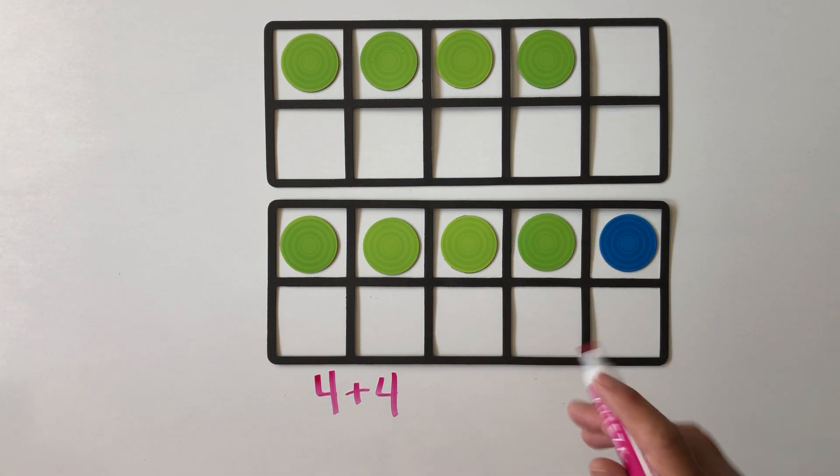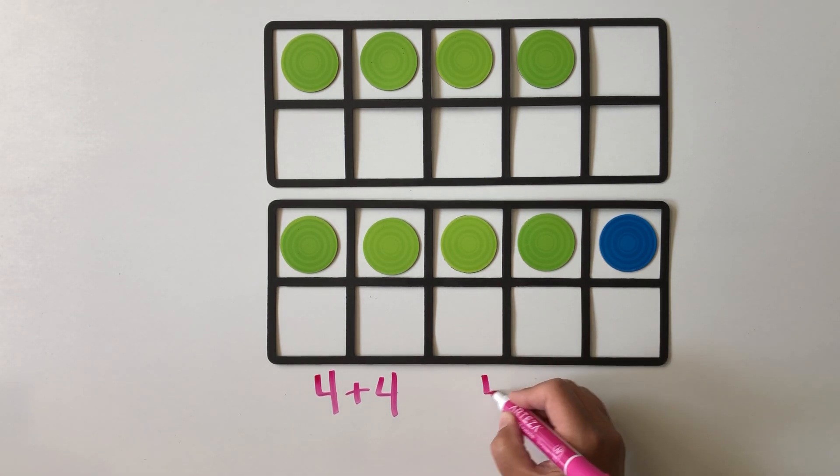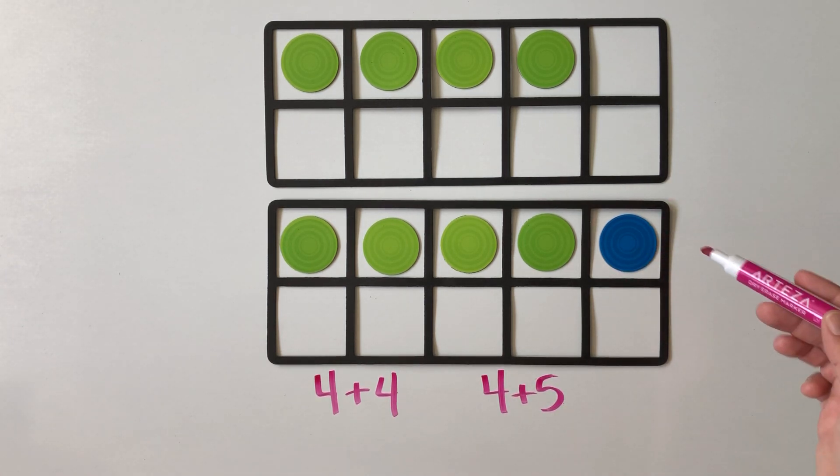If we knew that 4 plus 4 was 8, we could solve 4 plus 5 because we know that's just one more than 8. We don't really have to count all the dots again, right? We can build on what we knew about the doubles fact 4 plus 4.